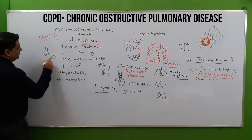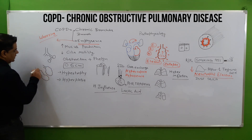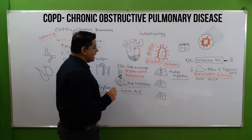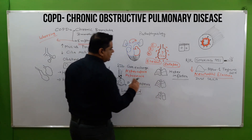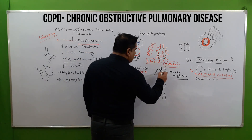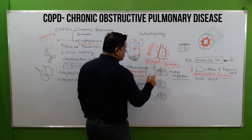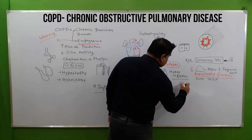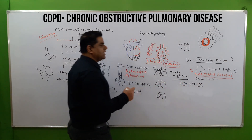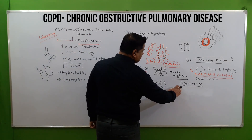This is normal alveoli versus abnormal pocket-like alveolar structures. These pocket-like structures can occur anywhere in the lungs, but generally they occur in the upper area near the bronchioles — this is known as centriacinar emphysema.